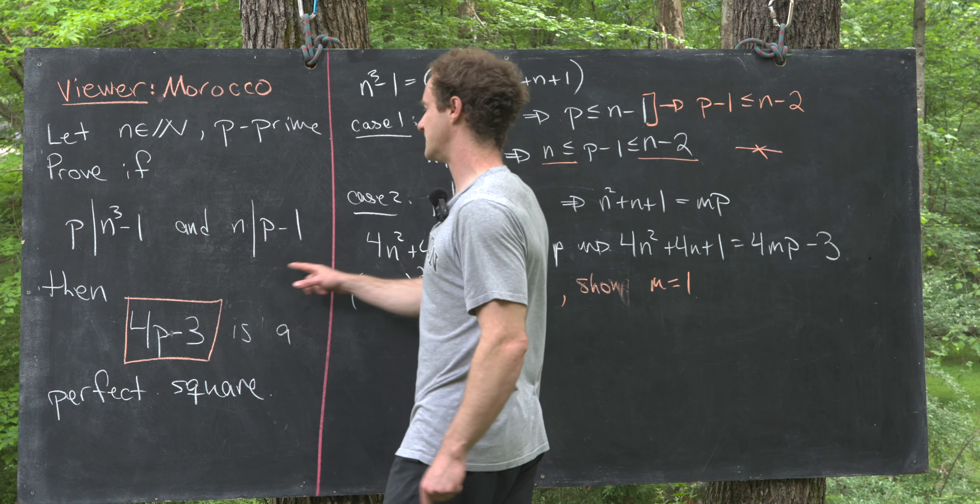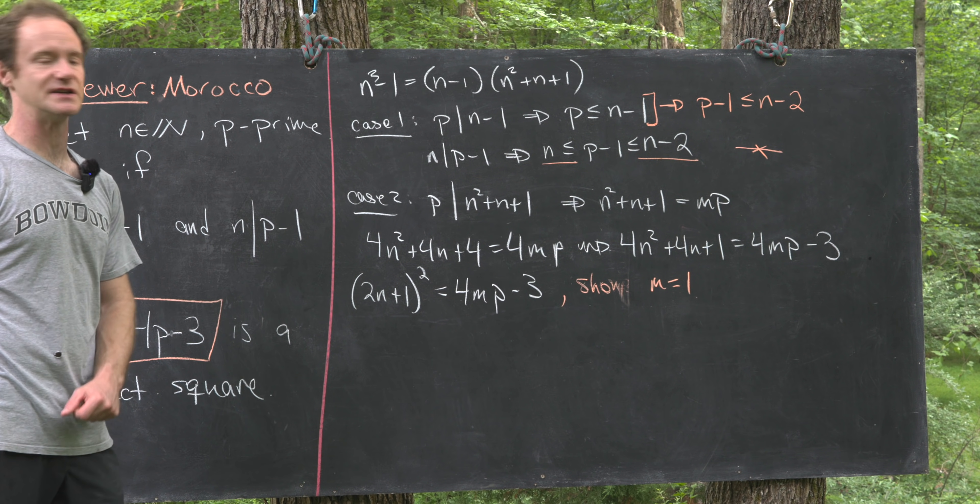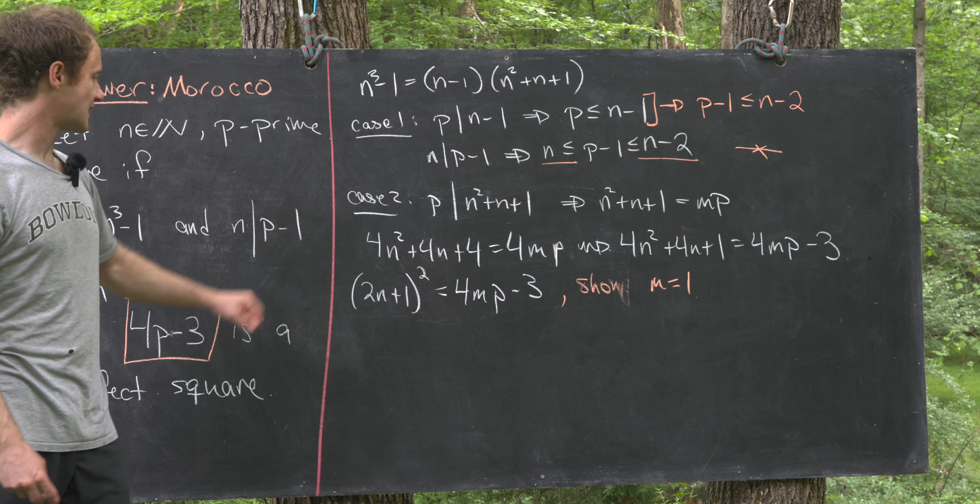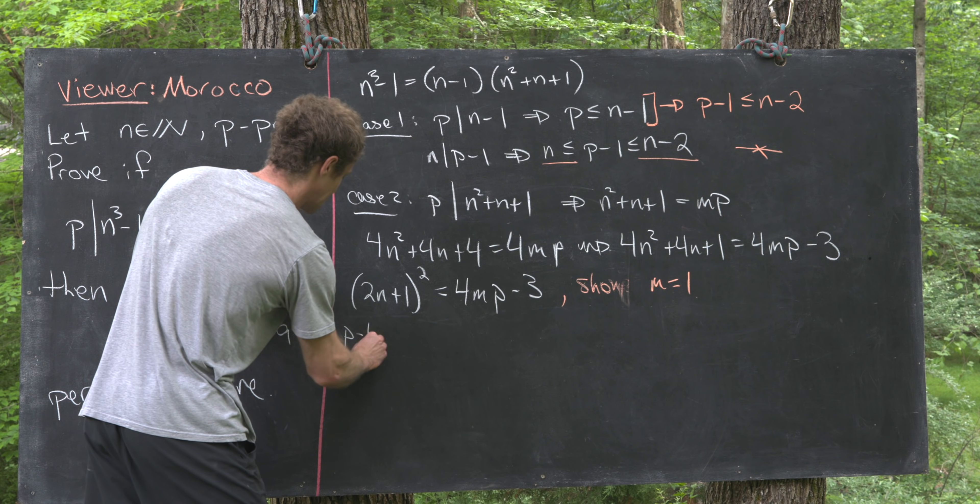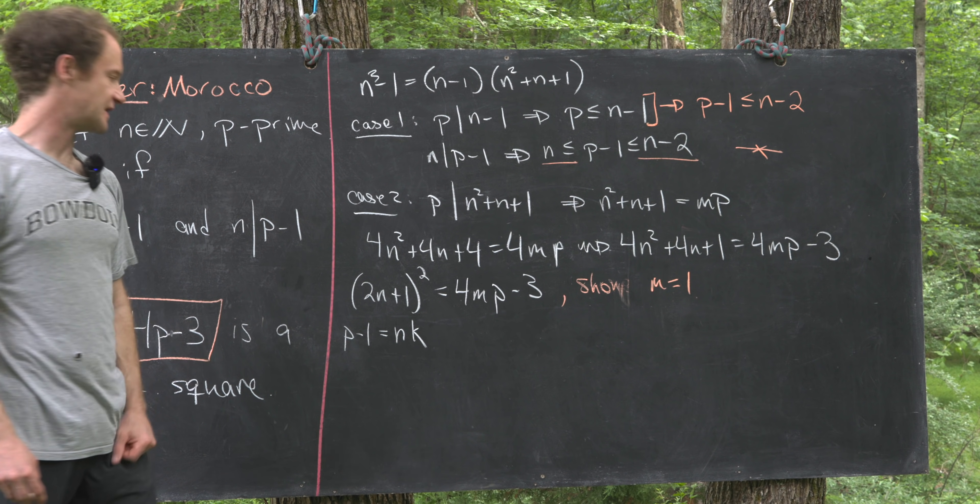Notice we haven't used this divisibility fact yet, so let's use that divisibility fact to see what we get. So if n divides p-1, that means p-1 is equal to n times k for some integer k.